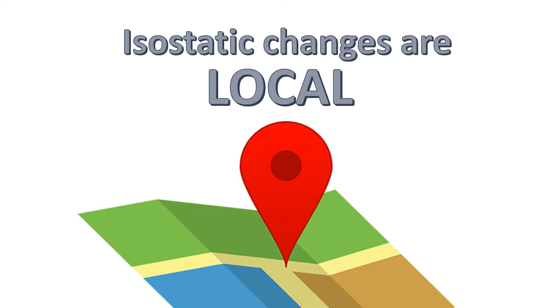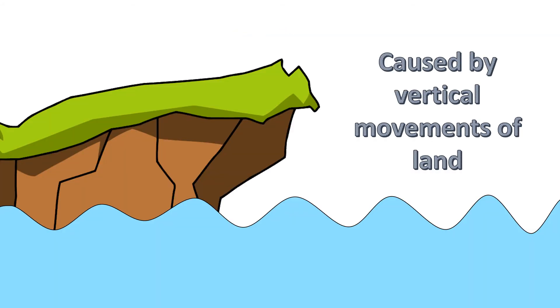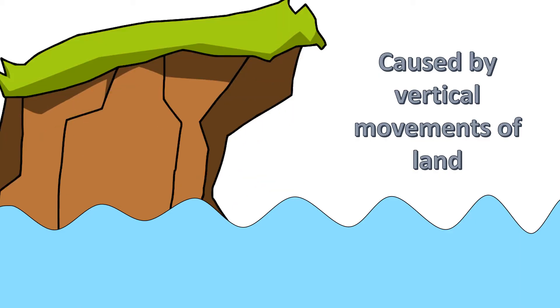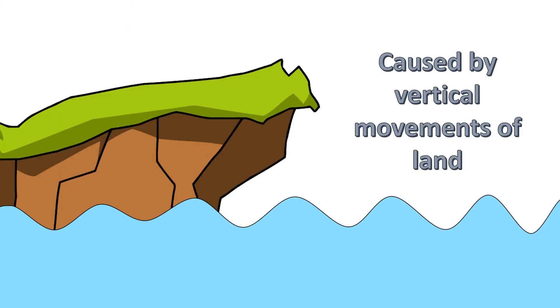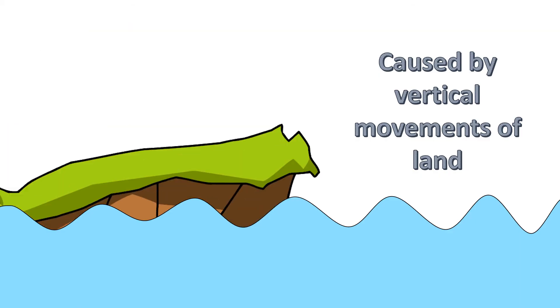Isostatic changes are local changes. This means that the sea level change only affects one area. Isostatic change is caused by vertical movements of land. Movement upwards causes sea levels to fall, whereas downwards movement of land causes sea levels to rise.